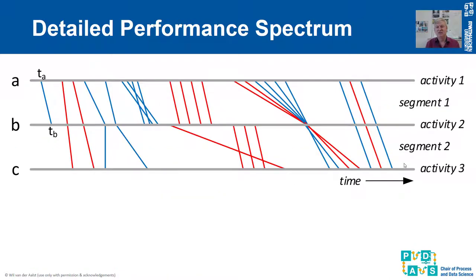For this we need a more fine-grained view. The fine-grained view that we propose are so-called performance spectra. Here you can see an example — think of lines A, B and C as points on the highway where cars are passing. We are basically looking at how long it takes to go from one point, for example point A to point B. TA is the event that the car passes checkpoint A, and TB is the time at which the car passes checkpoint B. All the colored lines correspond to cars moving from one point to another, corresponding to two causally related activities following each other.